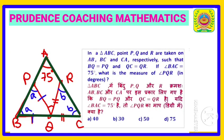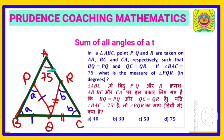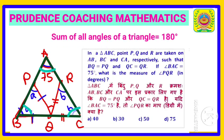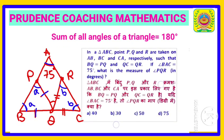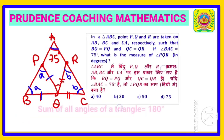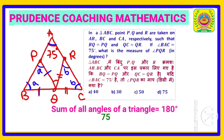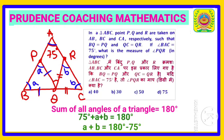Considering triangle ABC, the sum of all angles is 180 degrees. So we write 75 degrees plus A plus B equals 180 degrees. From this, A plus B equals 180 minus 75, which gives us A plus B equals 105 degrees.